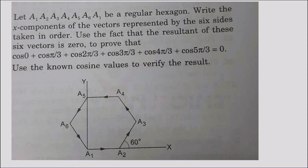Let A1 A2 A3 A4 A5 A6 A1 be a regular hexagon. Write the x-components of the vectors. Use the fact that the resultant of these six vectors is zero to prove that cos0 + cos(π/3) + cos(2π/3) + cos(3π/3) + cos(4π/3) + cos(5π/3) = 0. Use the known cosine values to verify the result.